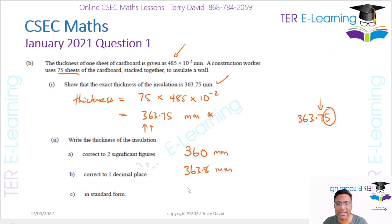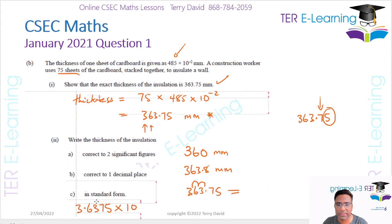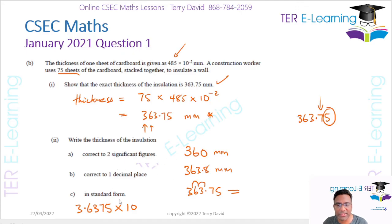For part c they want the answer in standard form. Starting from 363.75, I move the decimal point two places to the left, giving 3.6375 multiplied by 10 to the power 2 millimetres. That's my answer for part c.